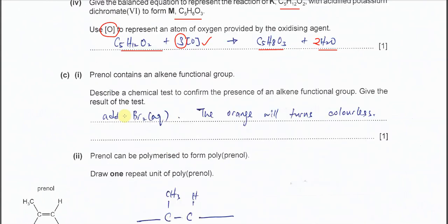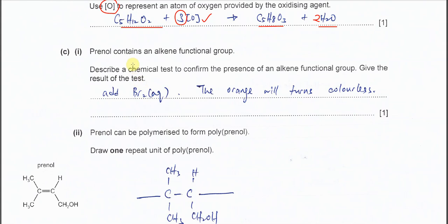Part C, prenol has the alkene functional group. Describe a chemical test to confirm the presence of this alkene. Nowadays, we just say that it's C=C double bond. We just use bromine water because orange, the orange solution will decolorize or will turn colorless.